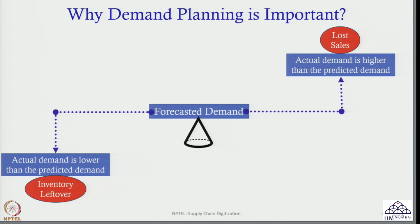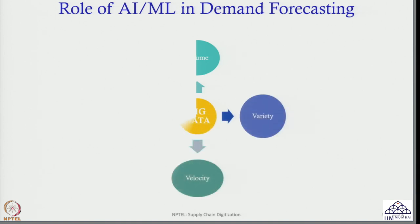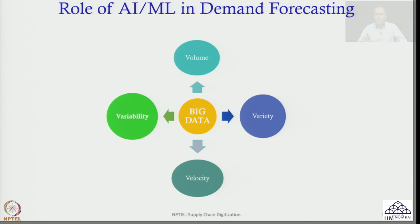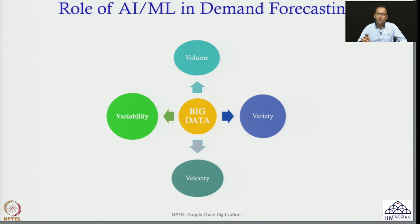Therefore, as a good supply chain planner, you have to make sure that your forecasted demand is close to the actual demand. If you can do that, your job as a demand planner will be very satisfying — but that is not an easy task. Why? For that we will recall the big data slide. Big data has 6 characteristics, and we will take 4 of them to explain why demand forecasting is both very important and very difficult in today's scenario.